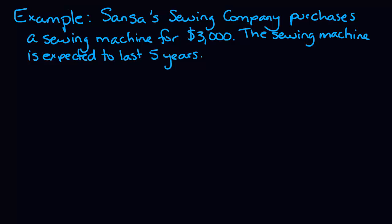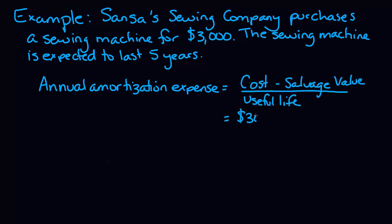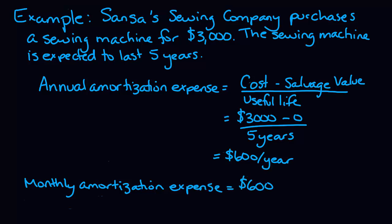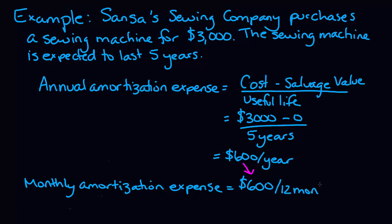So let's look at an example. We can calculate our annual amortization by taking the cost of $3,000 minus our salvage value. If it's not given, the salvage value is assumed to be zero. So we take $3,000 divided by our estimated useful life of five years, which gives us an amortization expense of $600 per year. If we divide that $600 by 12 months, it gives us a monthly amortization expense of $50 per month.